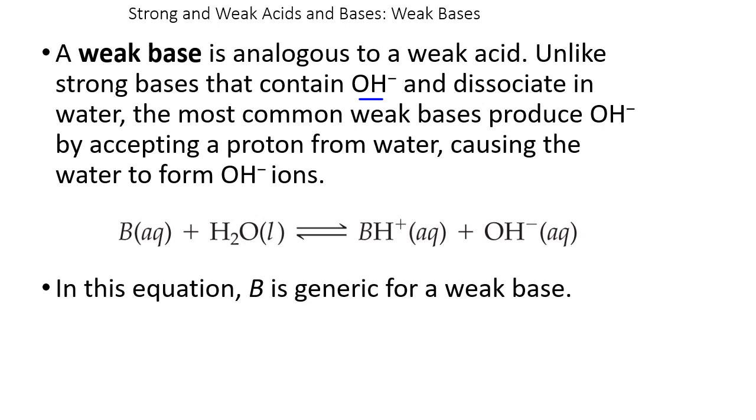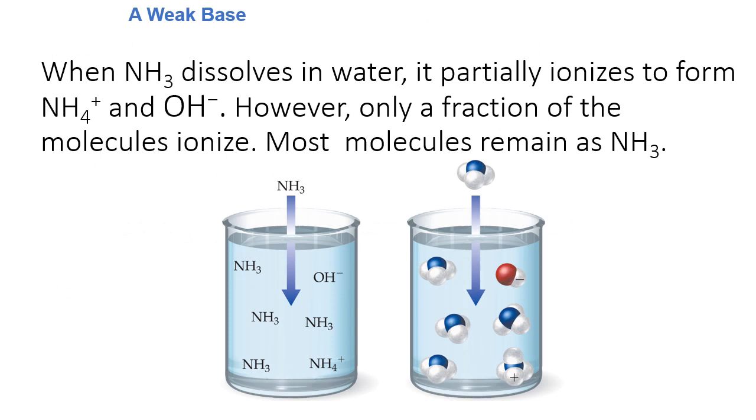right? When you get to the Bronsted-Lowry definition, those are proton acceptors. Bronsted-Lowry bases are weak bases. Arrhenius bases are normally strong bases. So if you see OH in a base, it's going to be a strong base.